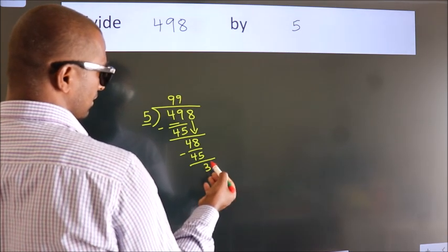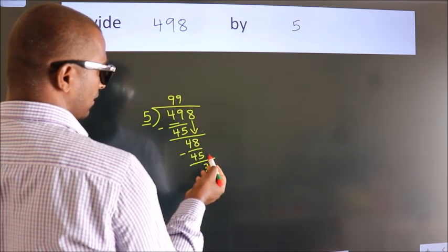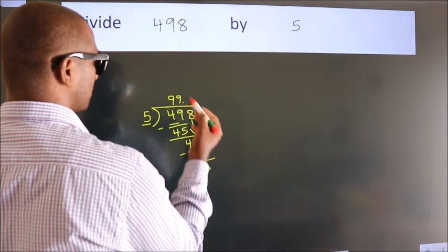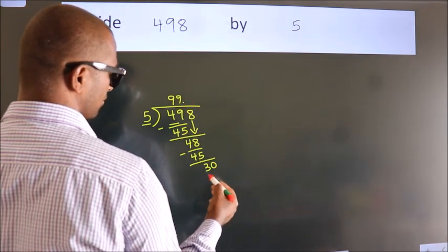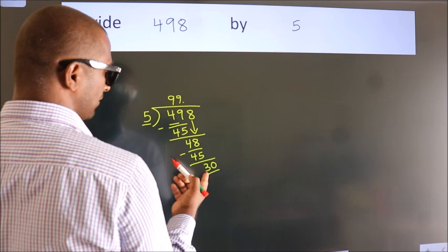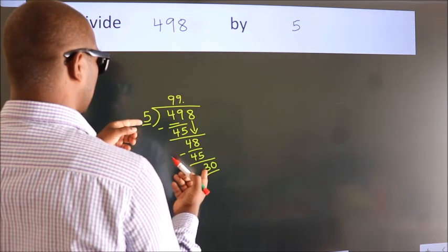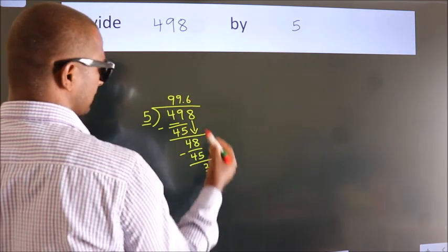After this, no more numbers to bring down. So what we do is put a dot and take 0. So we have 30. When do we get 30 in the 5 times table? 5 times 6 equals 30.